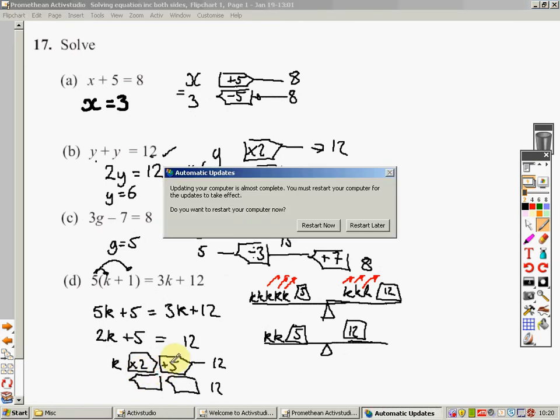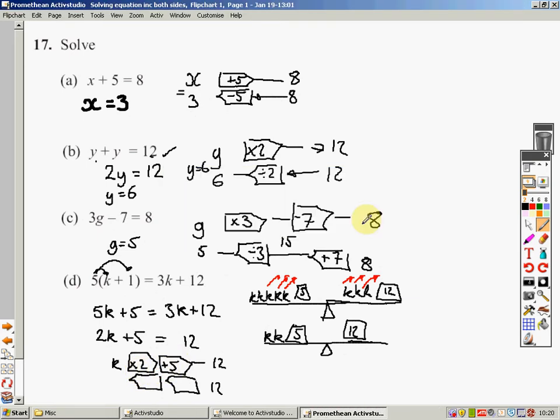Now I've got to undo both those operations in the reverse order. Opposite of adding 5, or the inverse of adding 5, is to subtract 5. The inverse of timesing by 2 is to divide by 2. There we go. 12, take 5, is 7. 7 divided by 2 is 3.5. You can either write 3.5 or you could write three and a half. The answer here would be, I'll write it over here, k equals 3.5. There we go.